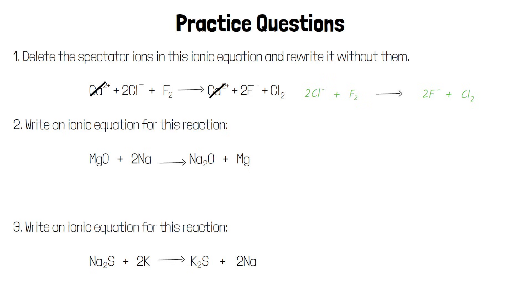For the second question we start by identifying the atoms and ions in the equation. MgO contains Mg2 plus and O2 minus ions and 2Na simply contains two uncharged sodium atoms. Sodium oxide contains two Na plus ions and an O2 minus ion and pure Mg is just an uncharged Mg atom.